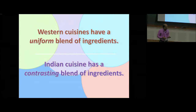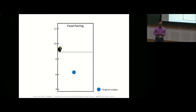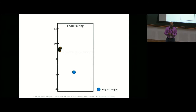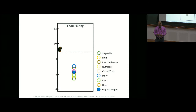The summary is that Western cuisines seem to have a uniform blend of ingredients, whereas Indian recipes we investigated tend to have a contrasting blend. An interesting experiment was to characterize cuisines by asking: given that food pairing is a quantifiable parameter, are there specific ingredient categories critical for the observed food pairing? What we did was shuffle ingredients within one category—say vegetables—randomly replacing each vegetable with another from the same category, keeping everything else the same, and measure what happens to the food pairing index.